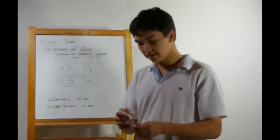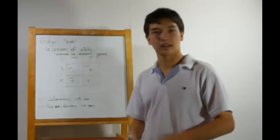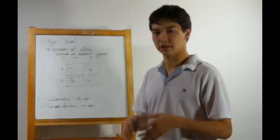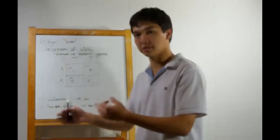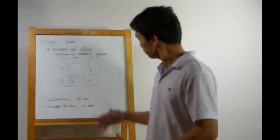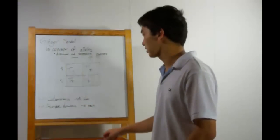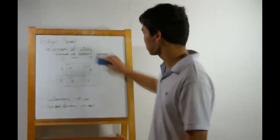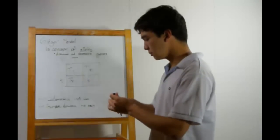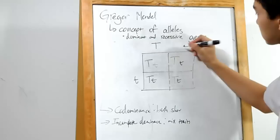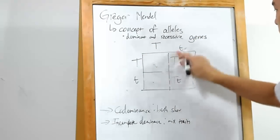We have the genotypes of the F1 generation. For the record, every generation after the parent generation (the P generation) is F and a number — F1, then F2, F3, and so on. So we now see the genotypes for the F1 generation. But what if we cross two members of the F1 generation — in other words, two big T little t's? That's what Mendel did, and the genotypes will change.